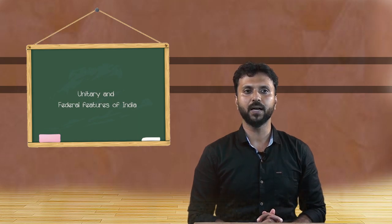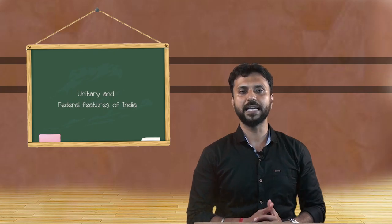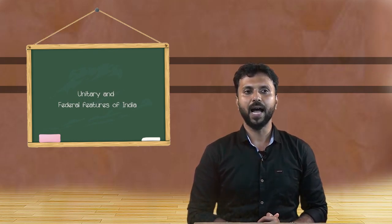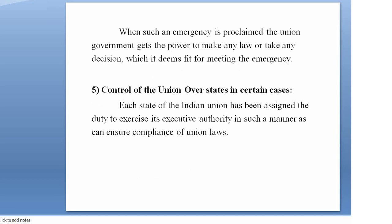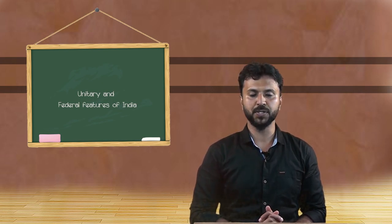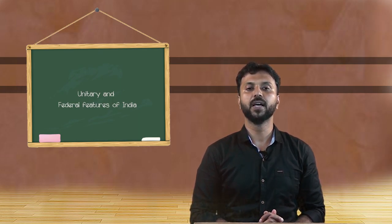There are also limits upon the jurisdictions of states even over state subjects. The constitution vests in each state the power to legislate and administer the subjects contained in the state list; however, there are several limitations. Emergency provisions of the constitution are vested in the hands of the president. Article 352 provides for national emergency, Article 356 for state emergency, and Article 360 for financial emergency.